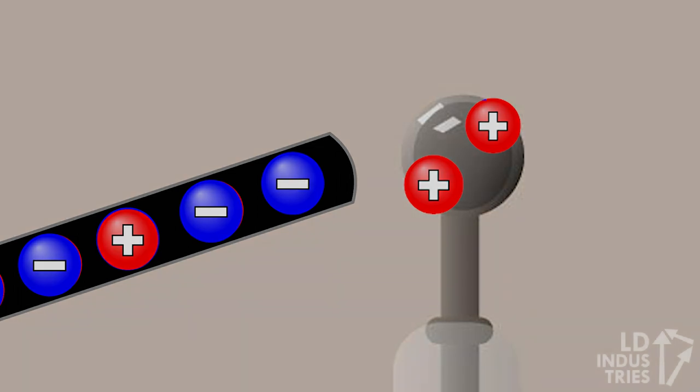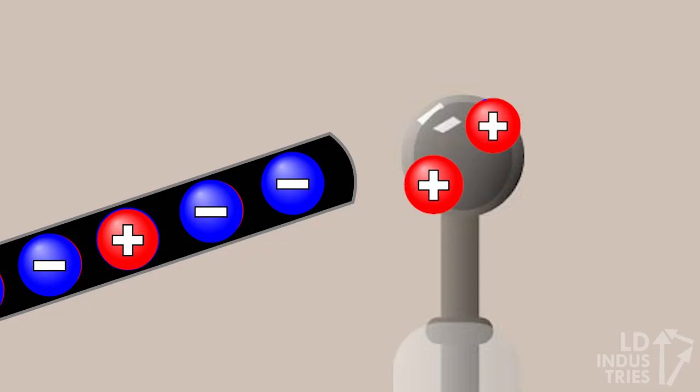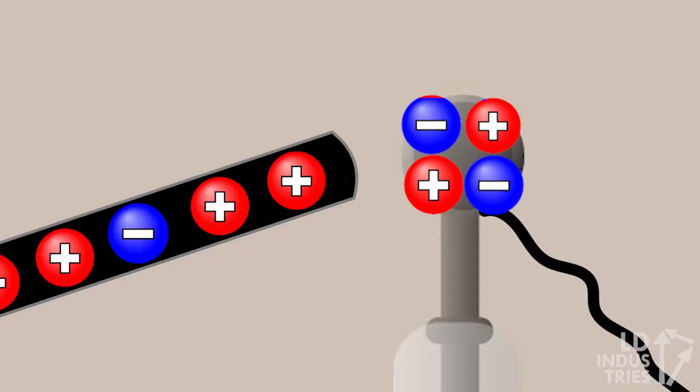and note how in induction and grounding, a negative rod will end up giving us a positive electroscope. Of course, the opposite scenario is also true. To practice this yourself, try and draw out what would happen if a positive rod was brought close to a neutral electroscope.